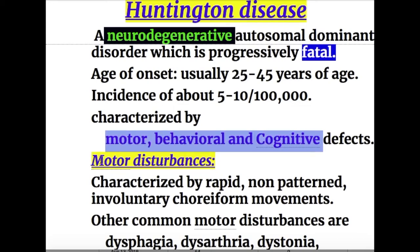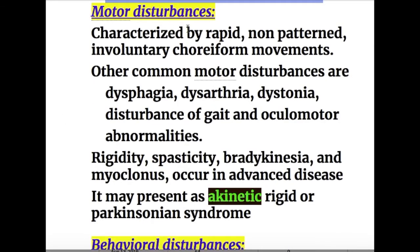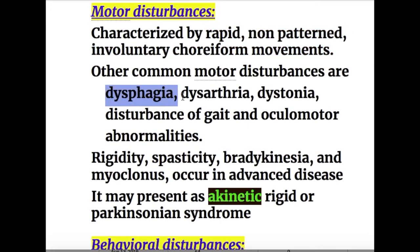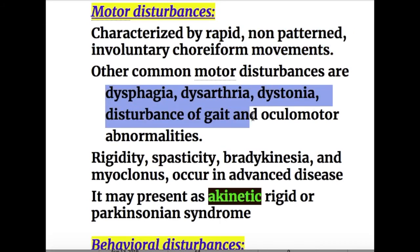The motor disturbances in Huntington disease are characterized by rapid, non-patterned, involuntary, choreiform movements. Other common motor disturbances are dysphagia, dysarthria, dystonia, disturbances of gait, and oculomotor abnormalities.